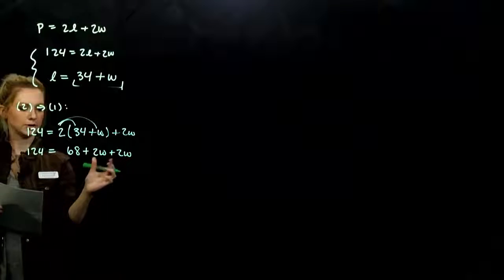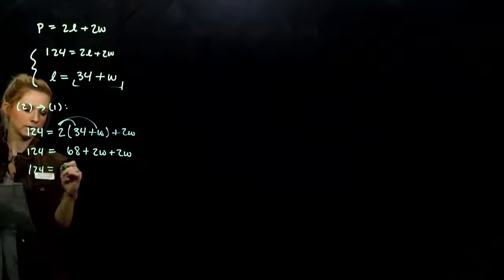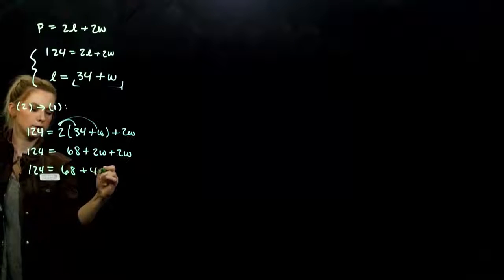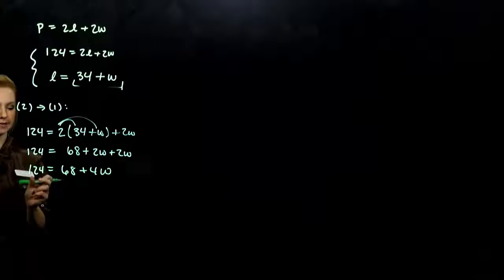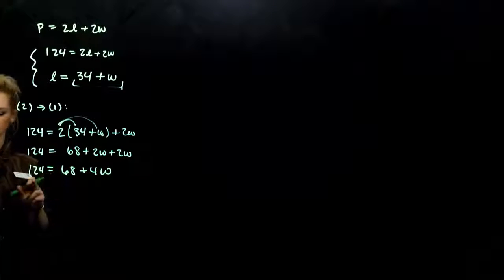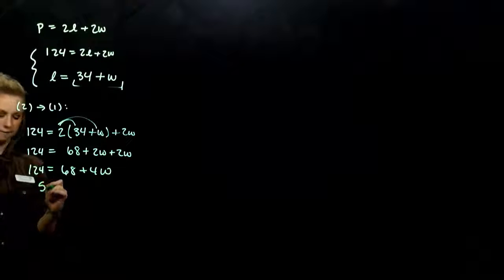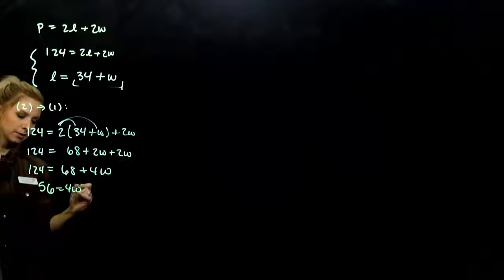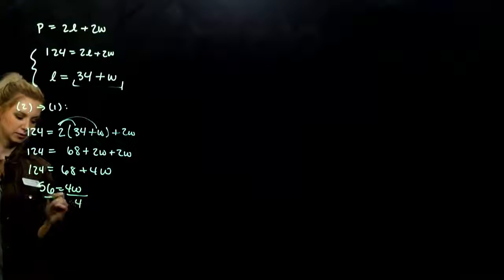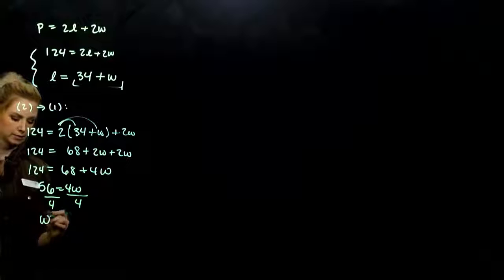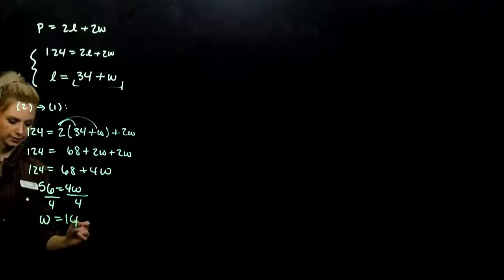We can combine our like terms. I've got 4 W's. We want to get the constants on the same side. So if I subtract 68 from both sides, looking at 56 is 4 W. And we want W on its own, we'll divide by 4. W is equal to 14.